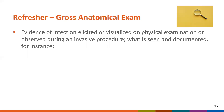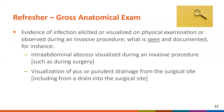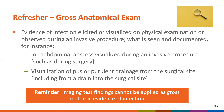Gross anatomical exam, as used in many NHSN definitions including those for SSI, means that there is evidence of infection elicited or visualized on physical examination or observed during an invasive procedure — it is what is seen and documented. For instance, an intra-abdominal abscess visualized during an invasive procedure such as surgery, or visualization of pus or purulent drainage from the surgical site, including from a drain that terminates within the surgical space. As a reminder, imaging test findings cannot be applied as gross anatomic evidence of infection; imaging test evidence has distinct findings in the NHSN definitions. For example, IAB 3B includes an imaging element.